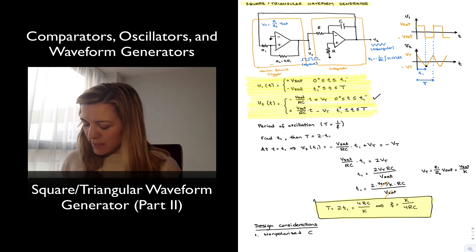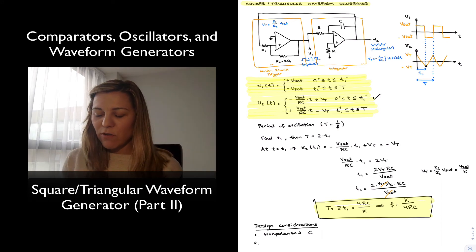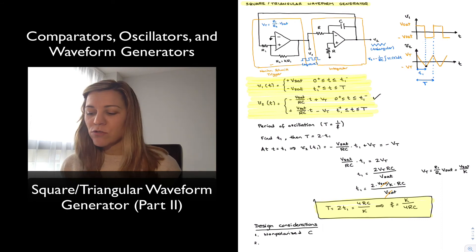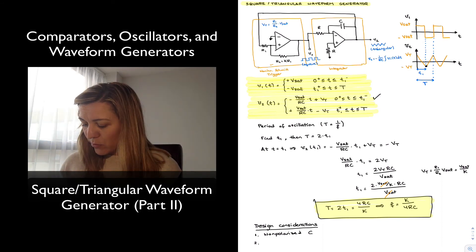And the second thing is notice that even though our first op-amp is operating between the positive and negative saturation regions, our second op-amp, which is part of an integrator circuit, is operating in the linear region. And so in order to be able to integrate the signal to function as an integrator, we need to ensure that that op-amp is operating in the linear region of operation.